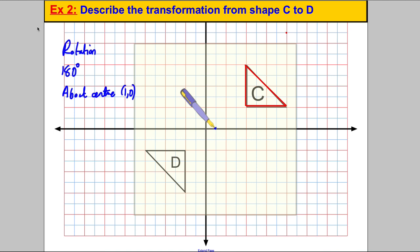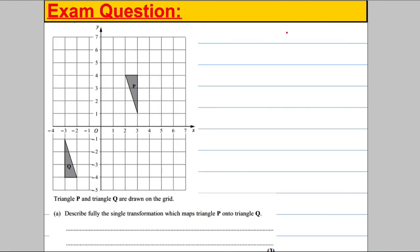So we've done two examples. What you've got to do is move the tracing paper around and hold it at different centre points until you get the rotation that makes the object fit into the image shape. Let's have a go at two exam questions to see if you understood this. In 10 seconds I'll go through the answer.